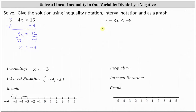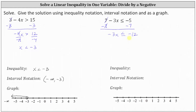Looking at our second example, we first want to isolate the variable term negative three x by subtracting seven on both sides of the inequality. Simplifying, seven minus seven is zero, leaving us with negative three x on the left, which is less than or equal to negative five minus seven, which is negative 12. We did not multiply or divide by a negative, and therefore we did not reverse the inequality.